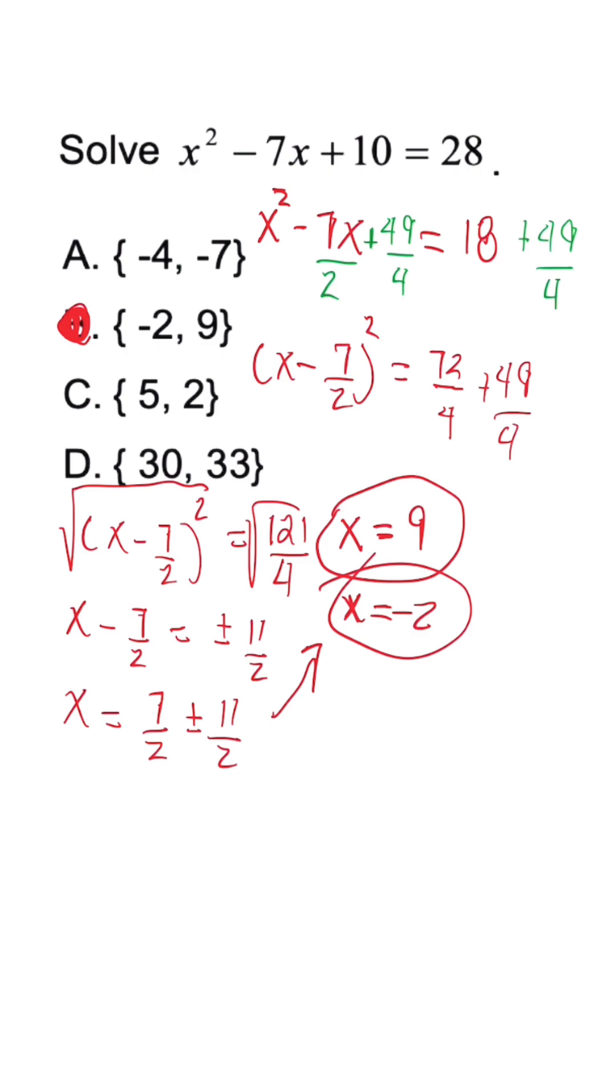Let's say you brought 28 over. You subtracted, we would have x squared minus 7x minus 18 is equal to 0. Once we factor this trinomial, we could have x minus 9 times x plus 2. Set our factors equal to 0, so that means x is equal to positive 9, which we have, and x is equal to negative 2, which we have. And this is how you could solve a quadratic equation with more than one method.